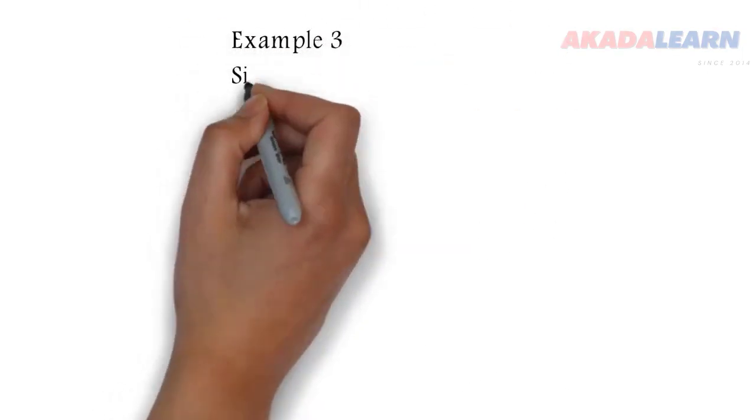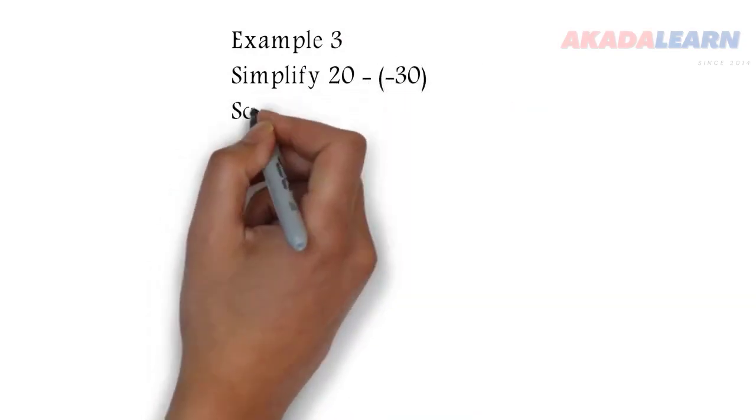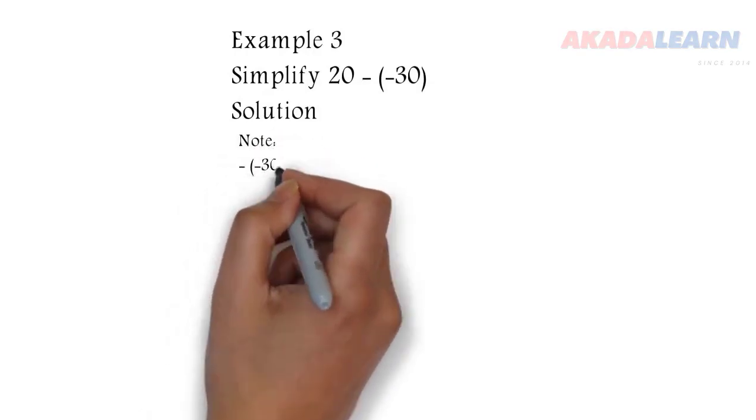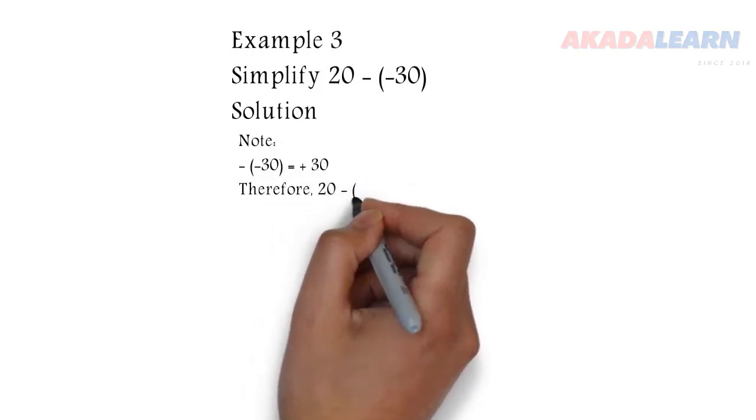Let's see another example. Simplify 20 minus minus 30. We want to use number line to do that. We need to note that minus minus 30 is the same thing as plus 30.